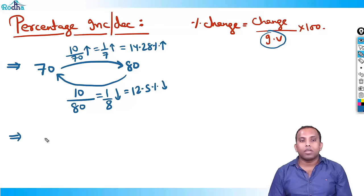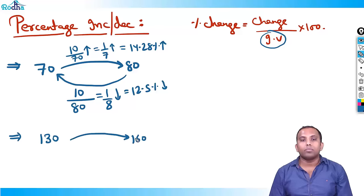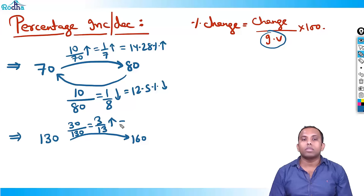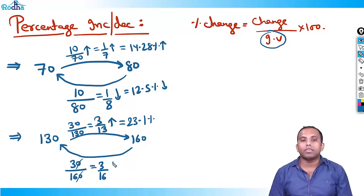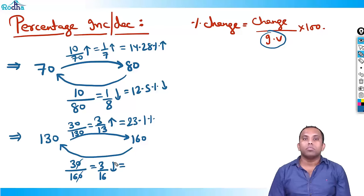Take one more example: a number has become from 130 to 160. What is the percentage change? Change of 30 on 130 — that is 3/13 increase, which is 23.1%. Now 160 to 130: change of 30 upon 160 — that is 3/16 decrease, which is 18.75%.